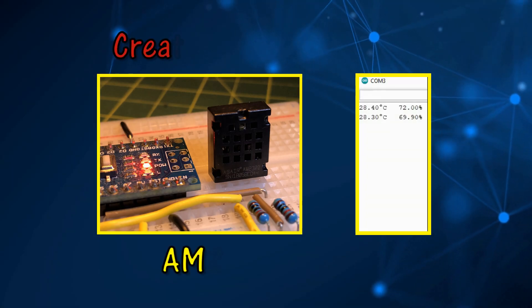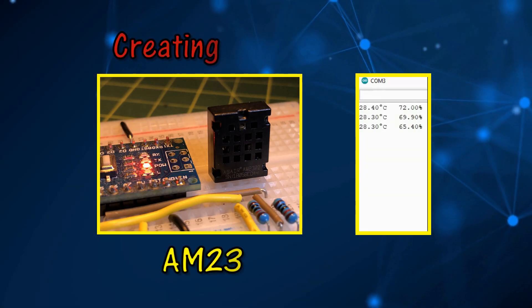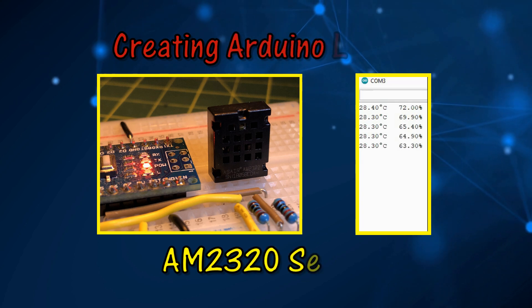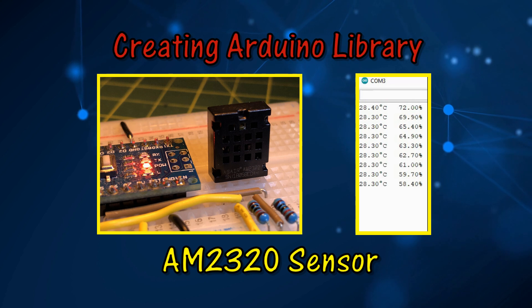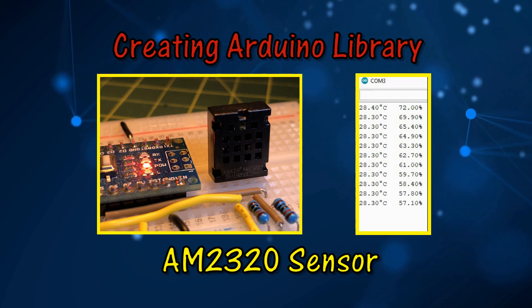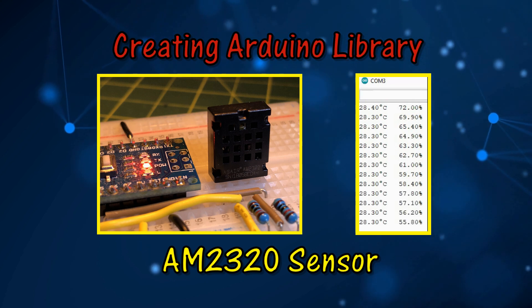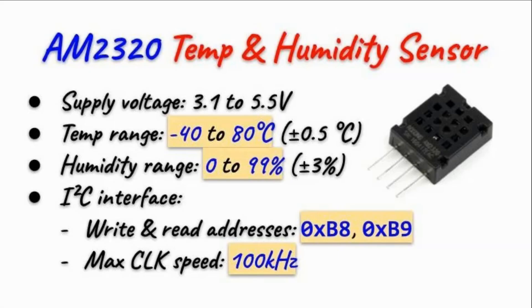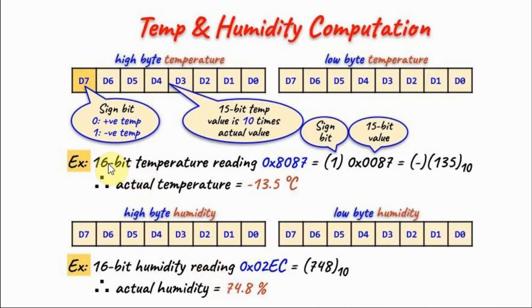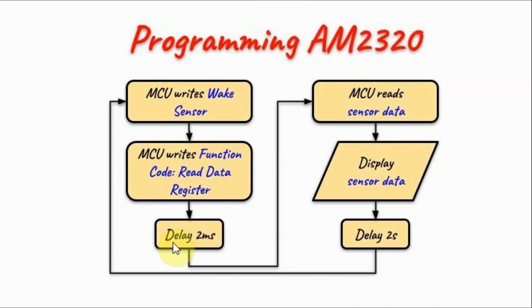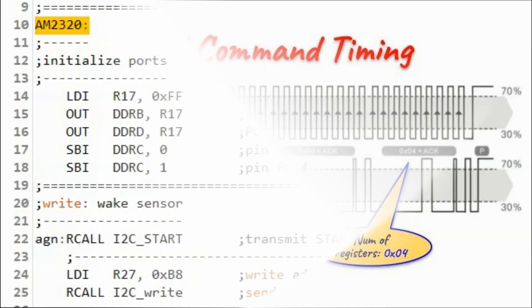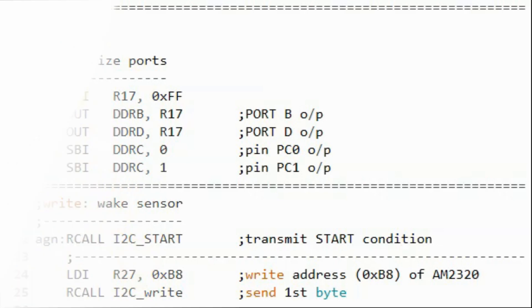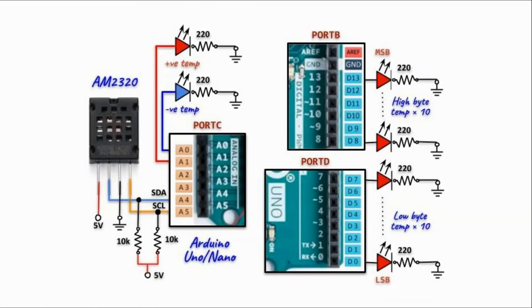In this video, an Arduino library is created for I2C sensor AM2320 to display temperature and humidity on different screens. To learn how to program sensor AM2320 using assembly language, please refer to my previous tutorial. A link to that tutorial is available in the video description.